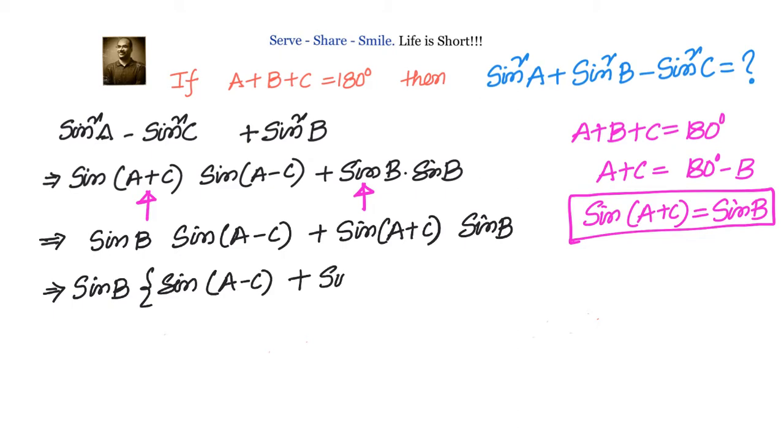Now as part of trigonometric transformations, we have formulas where we can change sum to product. The formula goes like sinC + sinD can be written as 2sin((C+D)/2)·cos((C-D)/2).